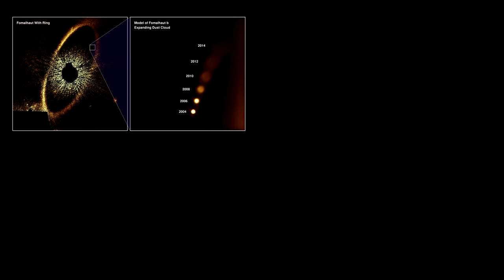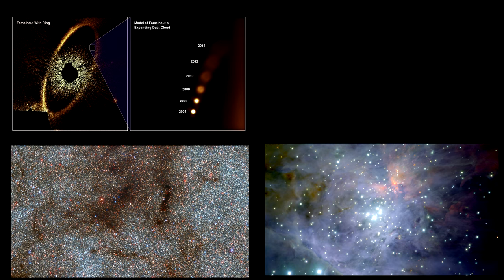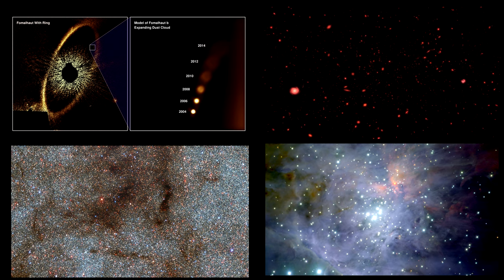These include exoplanet formation exploration, like finding out what happened to Fomalhaut b, star and planet formation in places like the Trapezian Cluster in the Orion Nebula, the age of stars in the Milky Way central bulge, and the search for first-generation Population 3 stars, just to name a few.